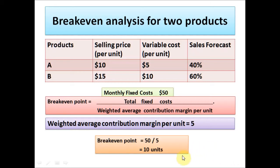Now we need to calculate the breakeven point. The formula is total fixed cost divided by the weighted average contribution margin per unit. You take $50 — the monthly fixed cost — and divide by the weighted average contribution margin per unit of $5. So 50 divided by 5 gives 10 units as the breakeven point.